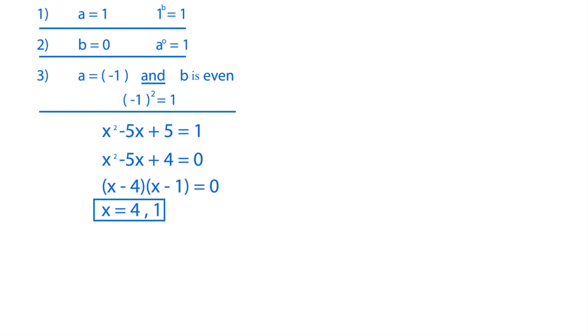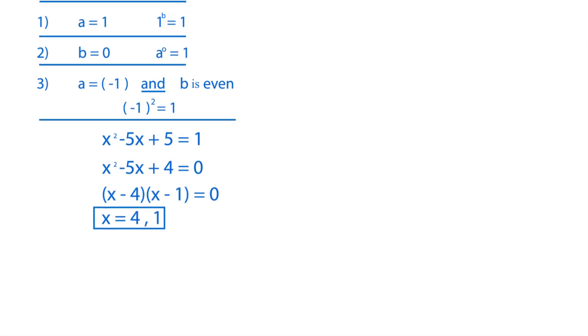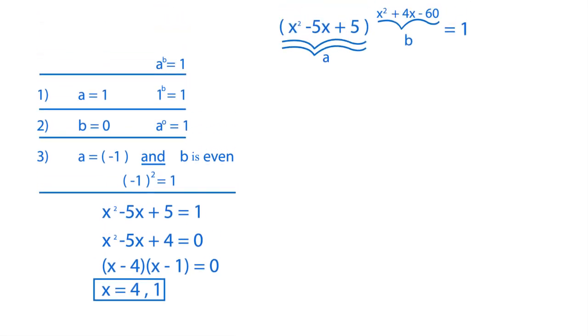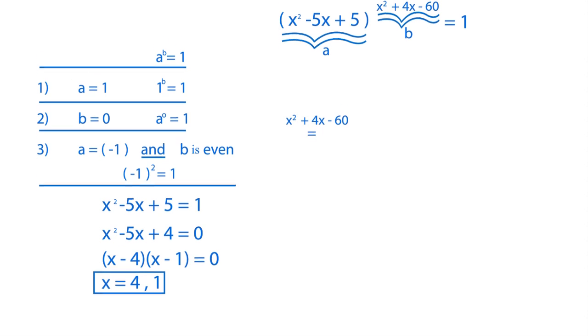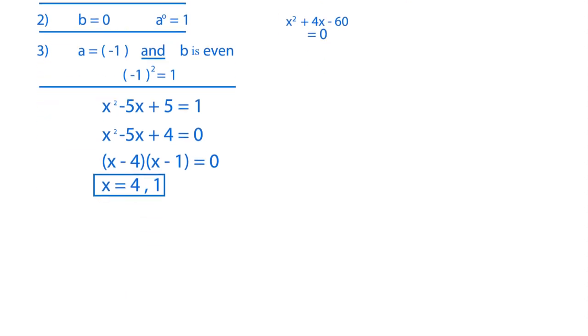Now our next scenario is when b equals 0. What is b? Well, this is b right here. So we want to set x squared plus 4x minus 60 to 0. Let's do that down here. So x squared plus 4x minus 60 is equal to 0.